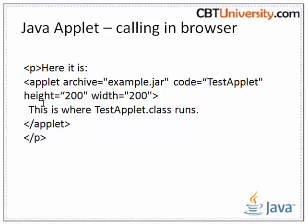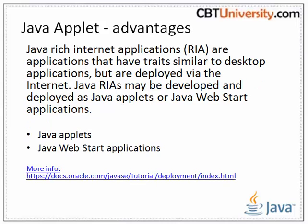Java applet advantages: Java Rich Internet Applications, that is RIAs, have traits similar to desktop applications but are deployed via the internet. Java RIAs may be developed and deployed as Java applets or Java Web Start applications. Java applets run in the context of a browser — the Java plugin software controls the execution and life cycle of Java applets. Java Web Start applications are launched via a browser the first time, and may subsequently be launched from a desktop shortcut. Once downloaded and the security certificate accepted, it behaves almost like a standalone application.